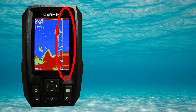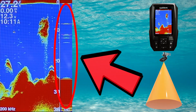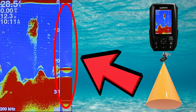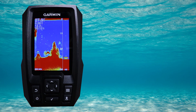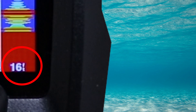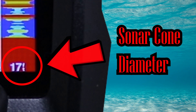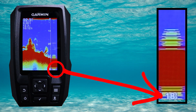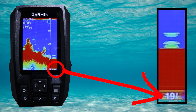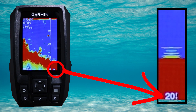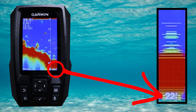Notice how the A-scope appeared on the right-hand side of the screen. The A-scope is going to show you what's happening inside your transducer cone area in real time. Look right here in the bottom right-hand corner of the A-scope and you'll see a number — that number is your sonar cone diameter. As you can see, as the depth changes, your sonar cone diameter is automatically updated, letting you know how much area around your boat or kayak your transducer cone is covering at all times.